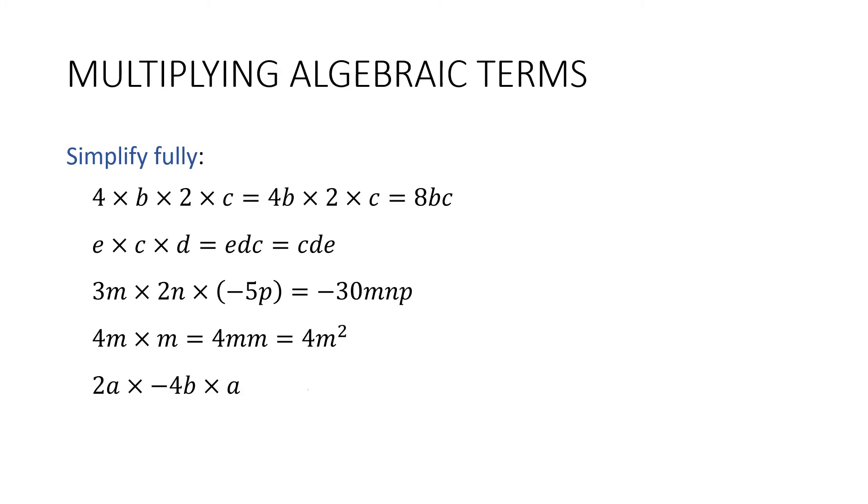And last one, 2a times negative 4b times a. All right, let's start with the signs. I've got a negative here and I don't have any other negatives. Remember, the only way to get rid of a negative is to multiply it by another one. So we're going to have a negative in the answer. Now let's do the numbers. 2 times 4 is 8. And then the pronumerals in alphabetical order, let's start with the a's. a times a is a squared. And then finally, we've got a b on the end. And so that's the answer. Negative 8a squared b.